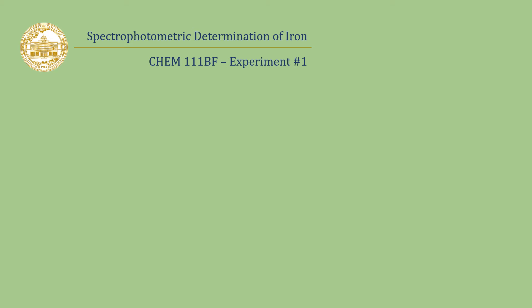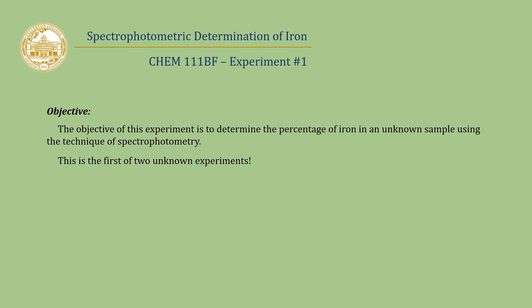This video presentation represents the pre-lab discussion for the first experiment, Spectrophotometric Determination of Iron. In this experiment, we'll find ourselves determining the percentage of iron in an unknown sample using the technique of spectrophotometry. This experiment is the first of two unknown experiments. You want to be sure to do the calculations correctly, and should you have any questions, contact your instructor.